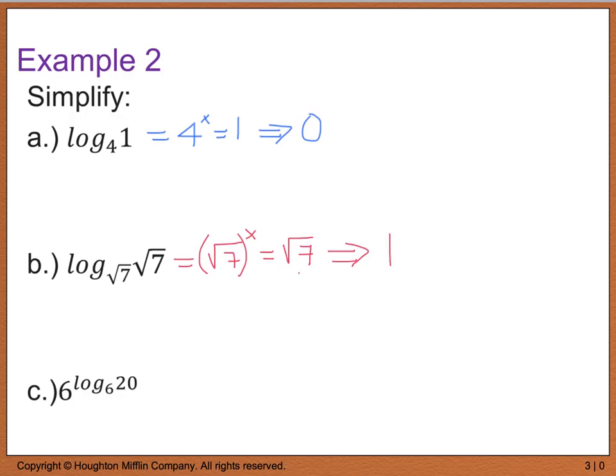Now part c is talking about the instance where we had a base, and we're going to raise that to the exponent of a log of the same base. Now when this happens, these right here are really going to cancel out, and we're going to be left with that 20.